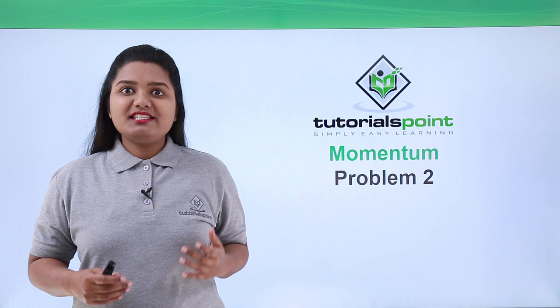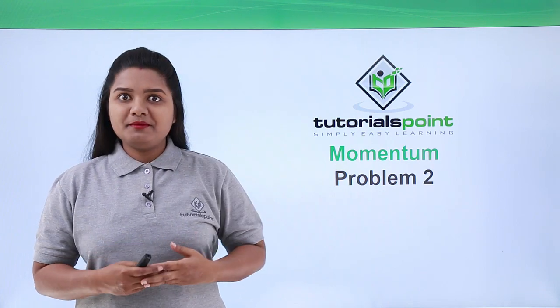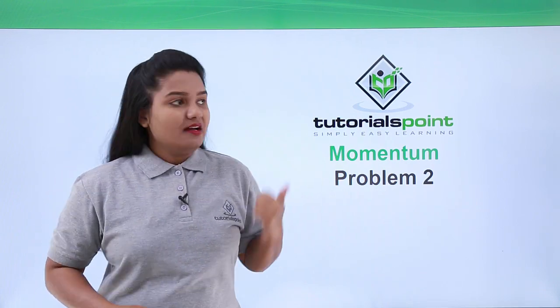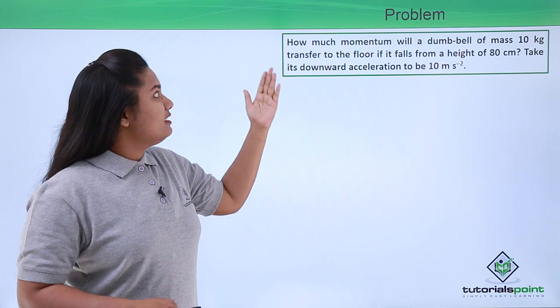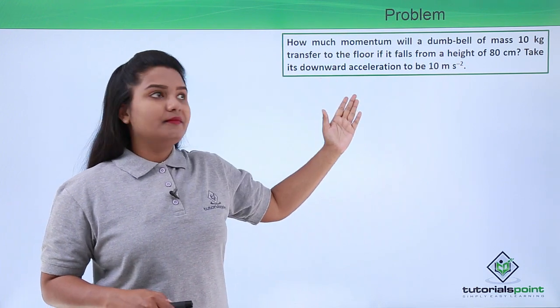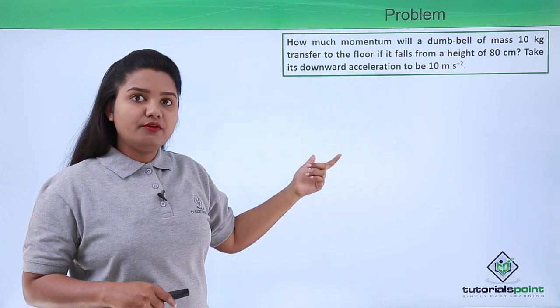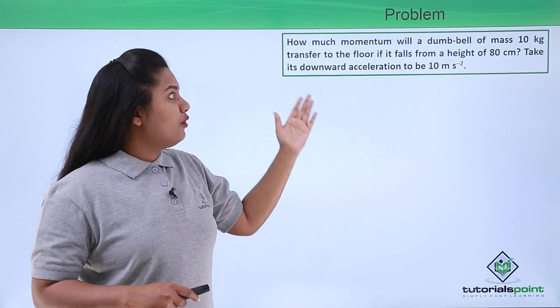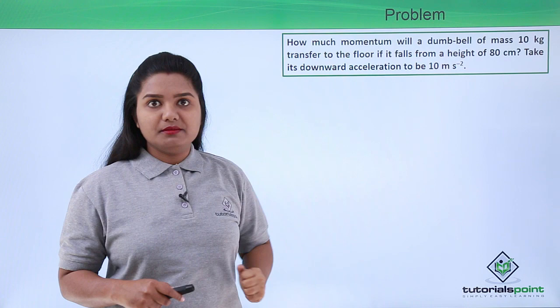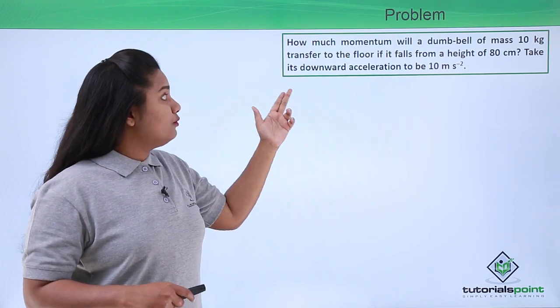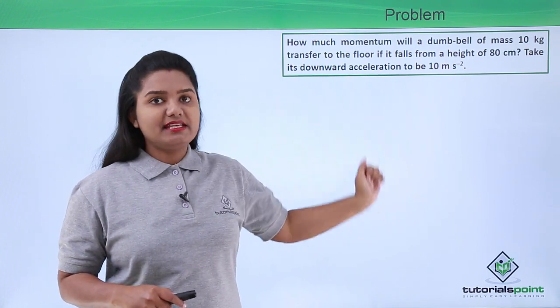Hello everyone, in this video we'll be solving another problem based on momentum. Here is the problem: How much momentum will a dumbbell of mass 10 kg transfer to the floor if it falls from a height of 80 centimeters? Take its downward acceleration to be 10 meters per second squared.